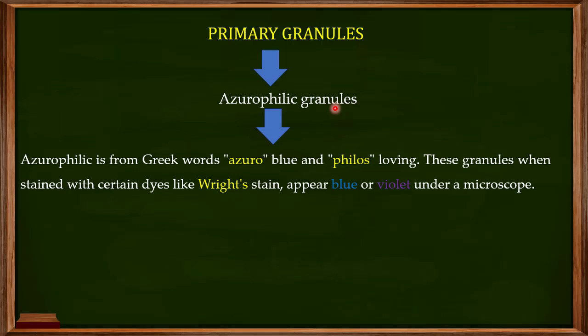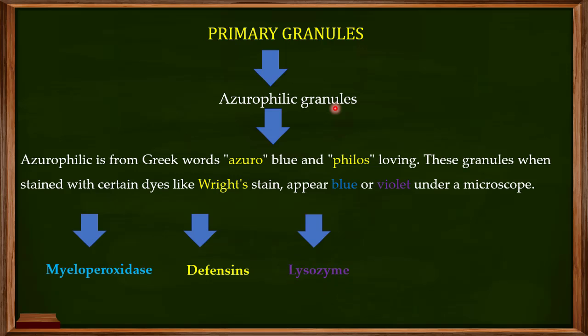The azurophilic or primary granules contain many antimicrobial proteins and agents. The most important ones I'll focus on are myeloperoxidase, defensins, lysozyme, elastase, and cathepsins. These are the key components found in primary granules and are very important for their antimicrobial properties. In this video I'll focus on the functions of myeloperoxidase specifically.